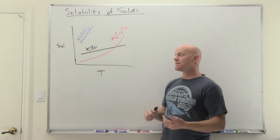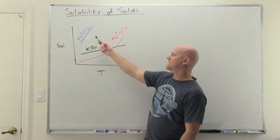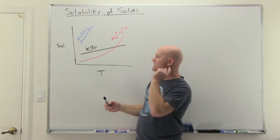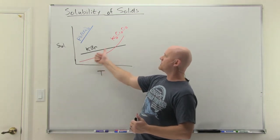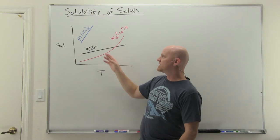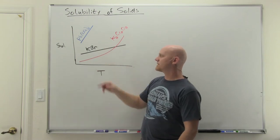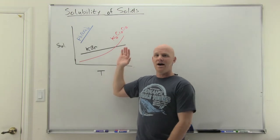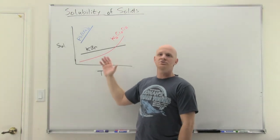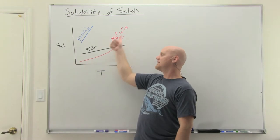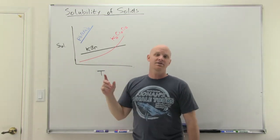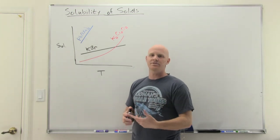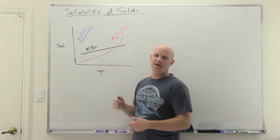For solids, we'll look at the solubility of three ionic solids: lead nitrate, potassium bromide, and potassium dichromate. All three show increasing solubility at higher temperatures — some curves look more linear, others more logarithmic. For the vast majority of ionic solids, solubility increases at higher temperatures, though a few exceptions exist.